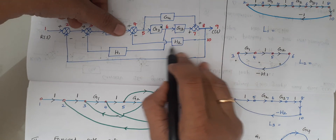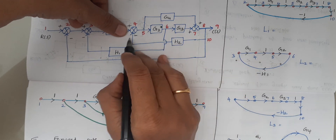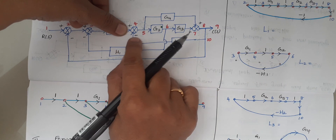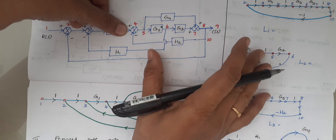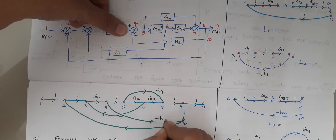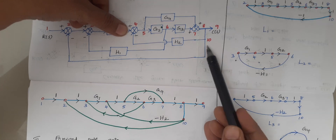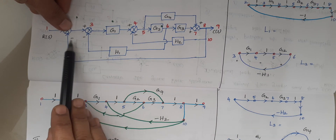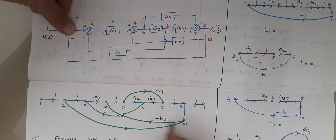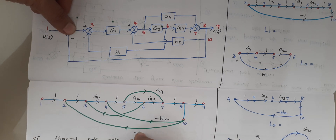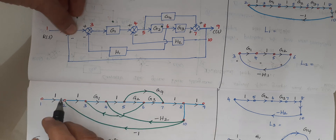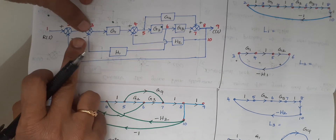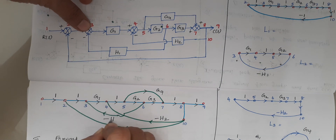From node 10 to 4 it is minus H2, because that block H2 is connected with the summing point with a negative sign. From the same node 10 to 2, we are having a unity feedback with a negative sign, so write it as minus 1. From node 6 to 3, we have H1 with a negative sign, so write it as minus H1.